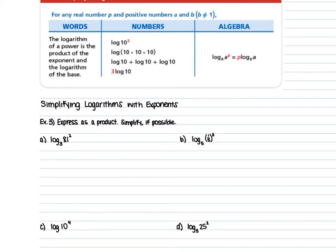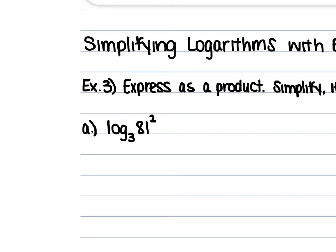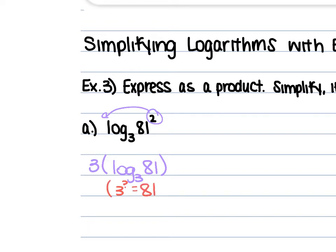Now for the power rule: we have log₃ of 81 raised to the 2nd power. We could evaluate log₃ of 81² = log₃ of 6,561, but it's much easier to bring that exponent to the front. So we have 2 times log₃ of 81. 3 to the 4th power is 81, so this is 2 times 4, which is 8.